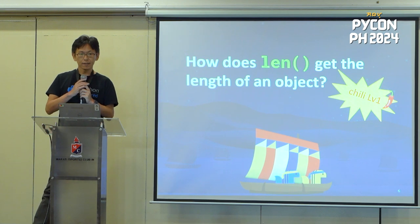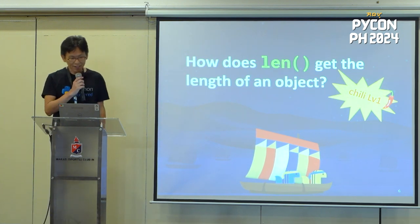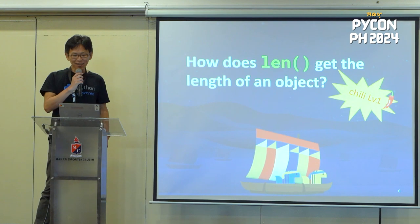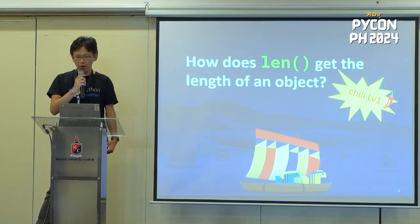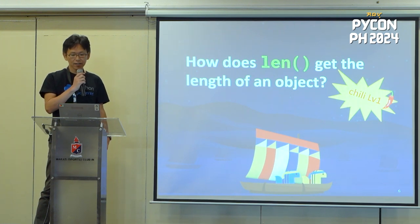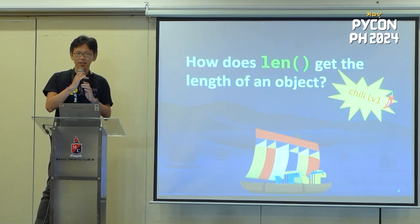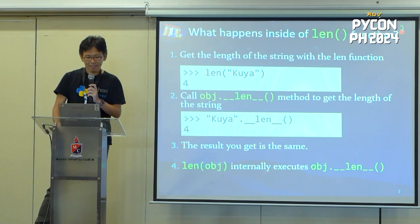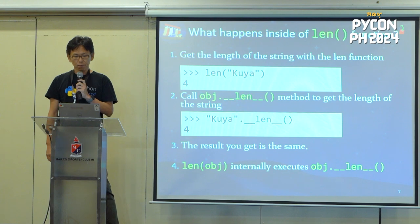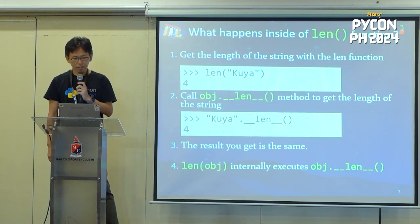Part One. How does the len function get the length of an object? This part is beginner's level — think of the chili as indicating difficulty. What happens inside the len function? For example, let's pass the string 'clear'. It returns four.